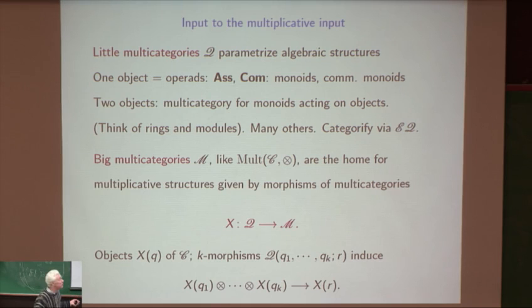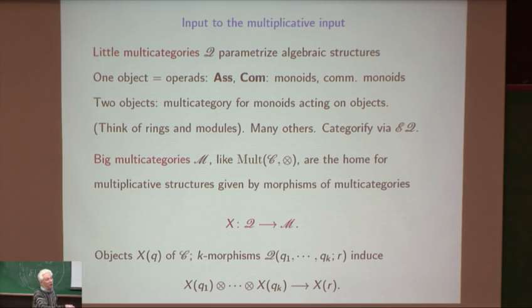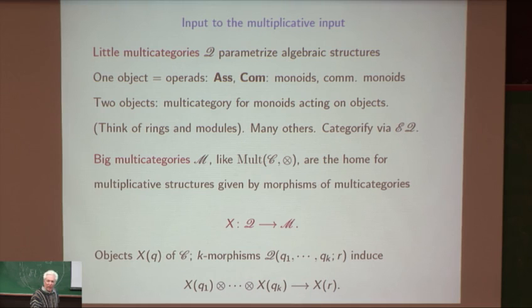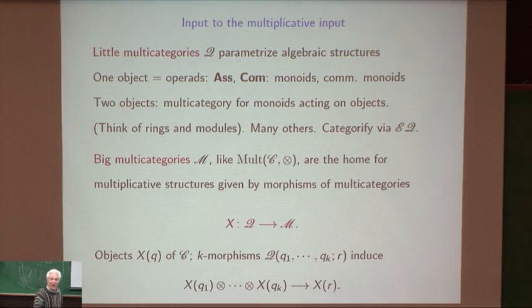You can think of an operad as a kind of baby multicategory. You can think of many others that parametrize rings, modules, algebras, and rings, modules, algebras up to contractible spaces of choices. Giving a morphism inside the multicategory you're interested in is just a map X from Q into M, where Q is one of these parametrizations of algebraic structures. Summary: we can transport any Q-structure on PG-categories to a Q-structure on this machine we've constructed, and it'll convert G-categorical input to G-spectrum output. All such non-equivariant structures extend multiplicatively by the 'G-ification' functor—taking the functor category of EG into anything, hitting any non-equivariant structure with that functor, and out comes genuine G-structure, which then feeds into the machine to give genuine structure on G-spectra.